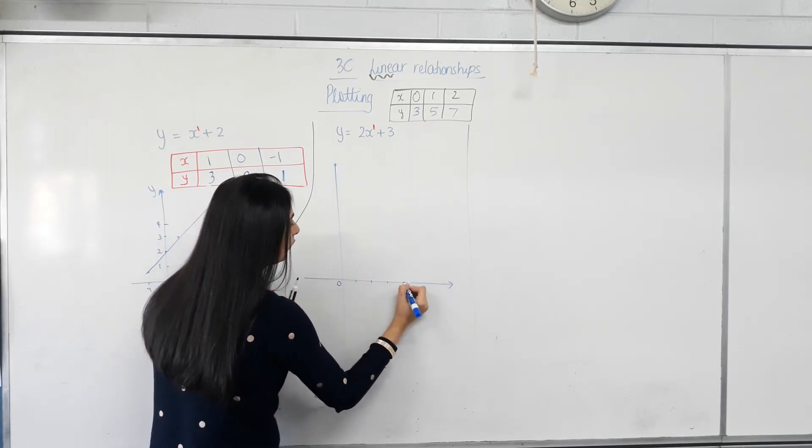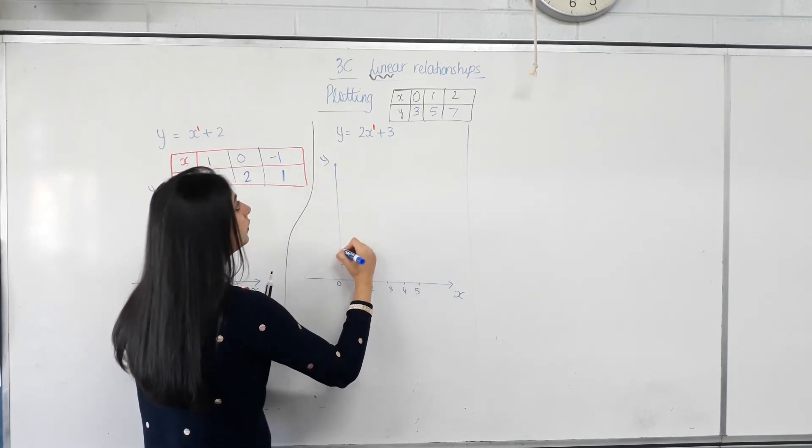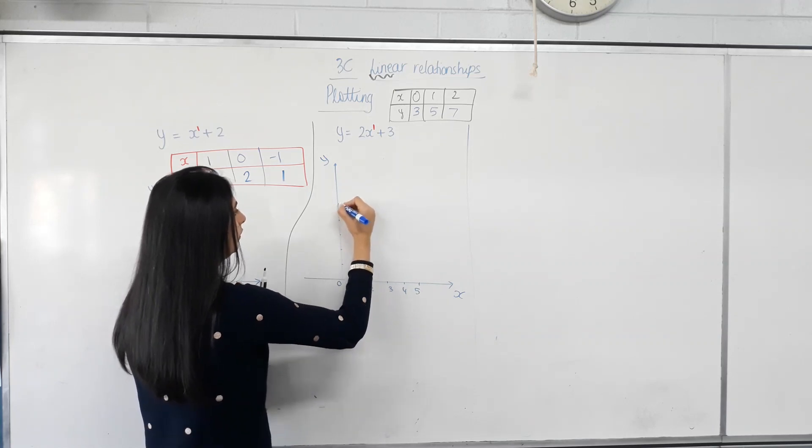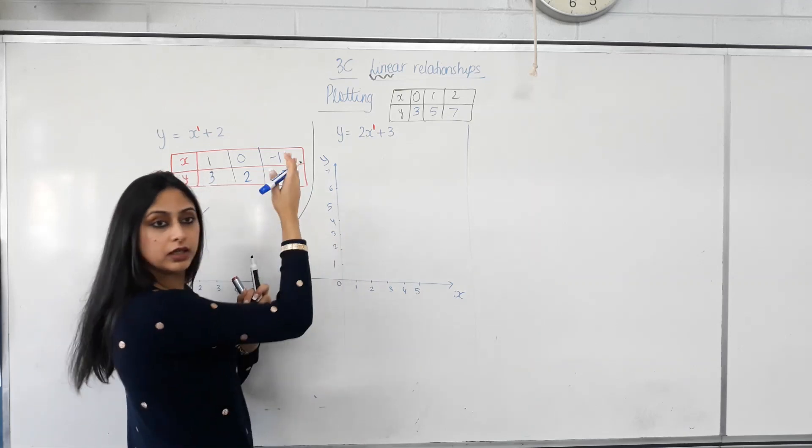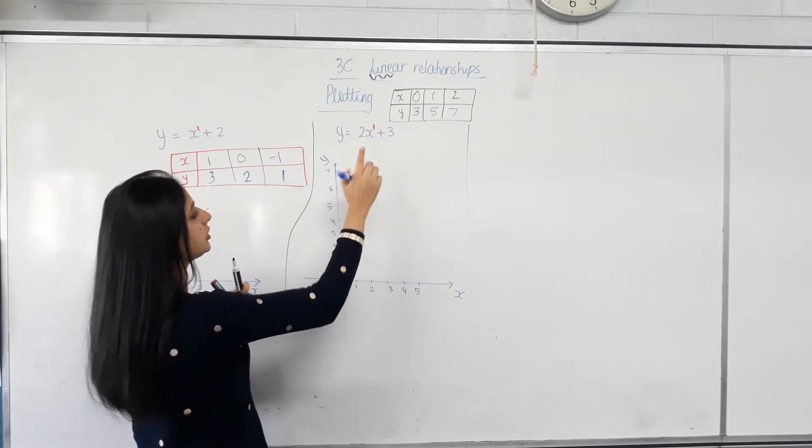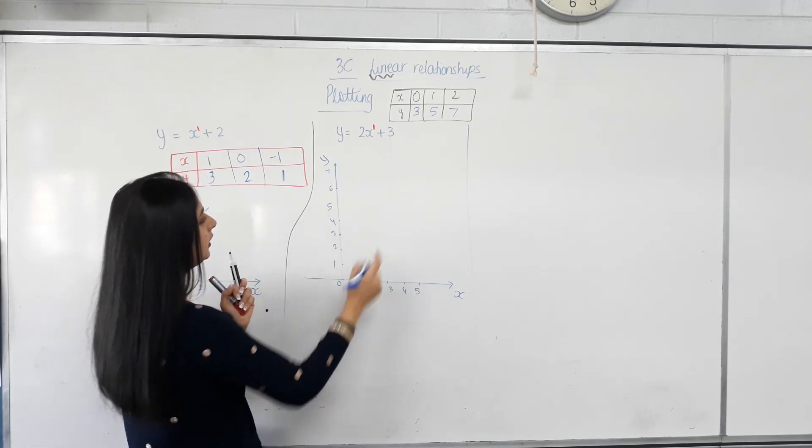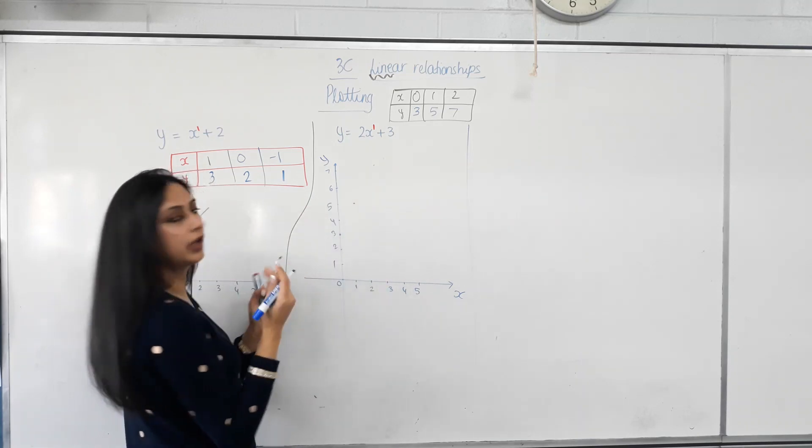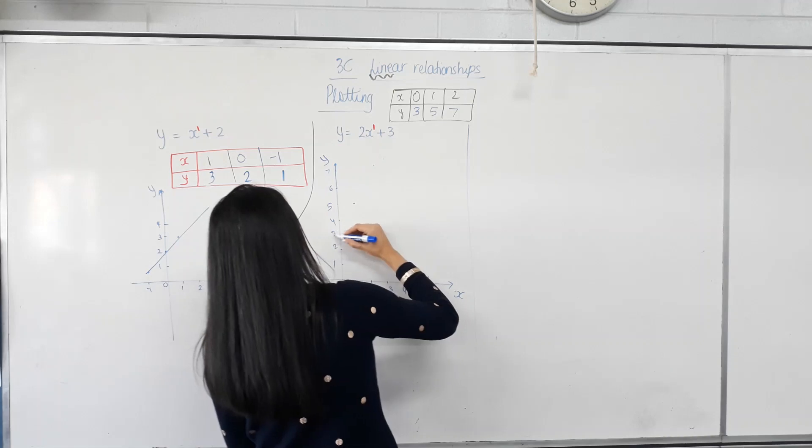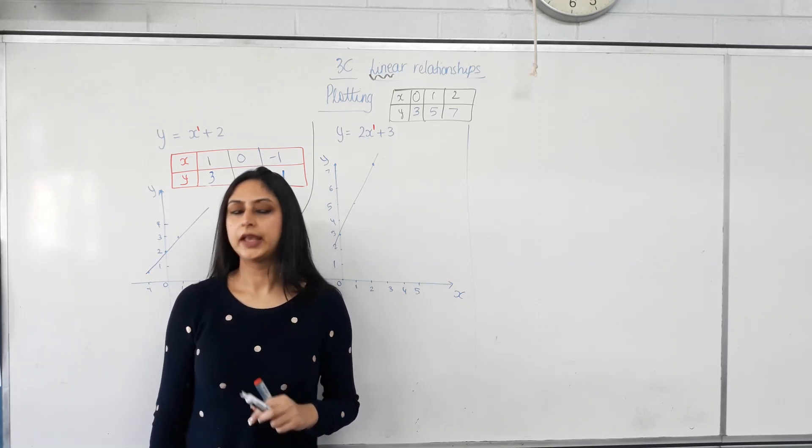Let's plot them. 1, 2, 3, 4, 5. Again, which axis is this? Y. Again, your markings, you need a ruler to actually get them evenly spaced. Okay. So when x is 0, y is 3. X is 1, y is 5. And x is 2, y is 7. And I'm glad they still lie on a straight line because they should. You need a ruler for this one. Make sense?